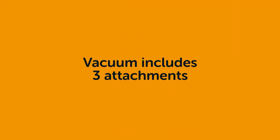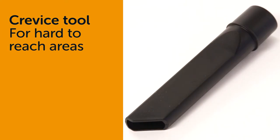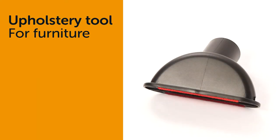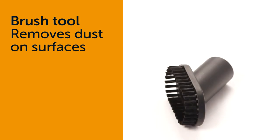The vacuum includes three attachments: a crevice tool for hard to reach areas, an upholstery tool for furniture, and a brush tool to remove dust on surfaces and household objects like picture frames.